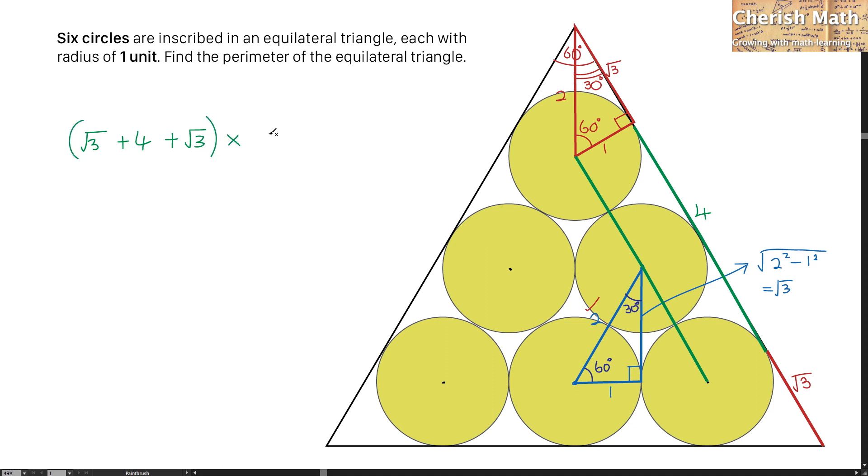And I have to multiply it by 3 simply because in an equilateral triangle, that consists of 3 sides and the answer that I'm getting here is 6 square root of 3 plus 12. And I solved the puzzle.